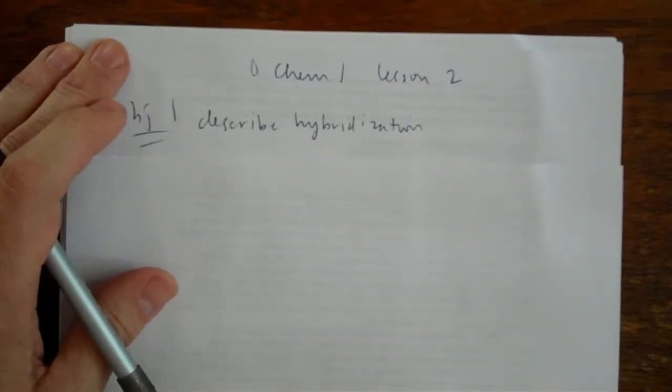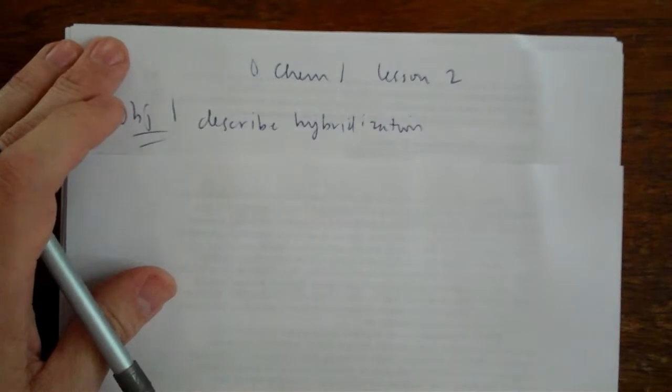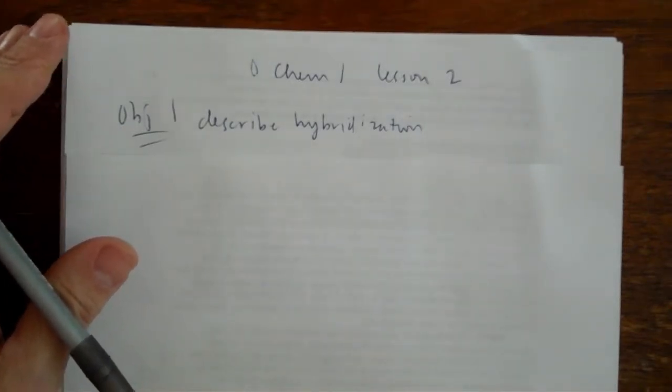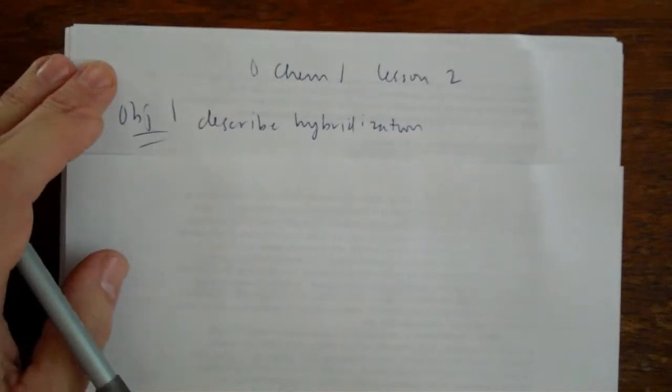The first objective I touched on in the last video a little bit is describe hybridization. Describe the hybridization and how it leads to double, single, and triple bonds.